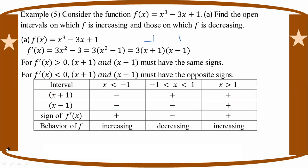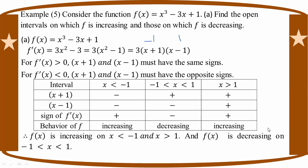So the conclusion is: on the open interval A less than minus 1, the function is increasing. On the open interval A greater than 1, the function is also increasing. On the open interval minus 1 less than A less than 1, the function is decreasing. So F of A is increasing on A less than minus 1 and A greater than 1, and F of A is decreasing on minus 1 less than A less than 1.